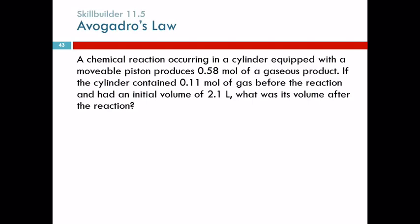A chemical reaction occurring in a cylinder equipped with a movable piston produces 0.58 moles of a gaseous product. If the cylinder contained 0.11 moles of gas before the reaction and had an initial volume of 2.1 liters, what was its volume after the reaction?